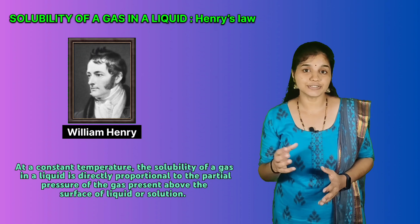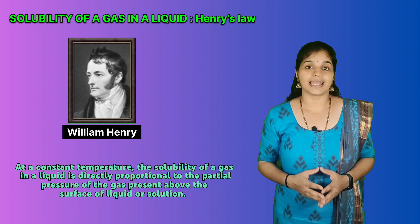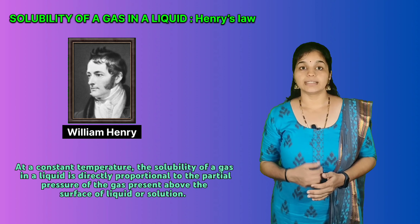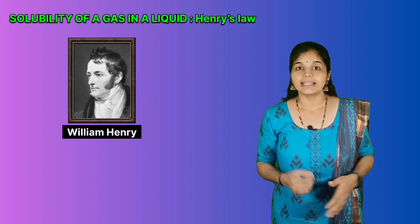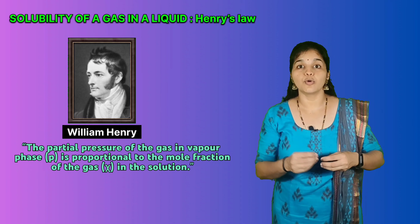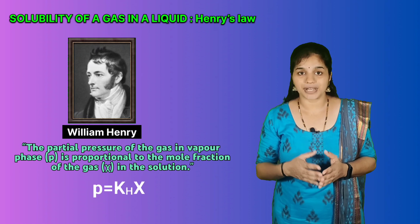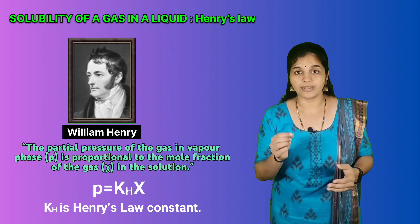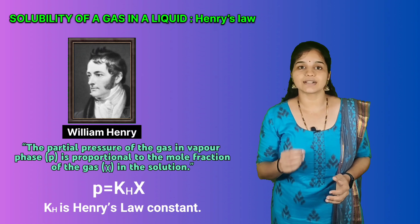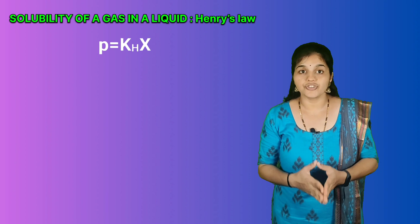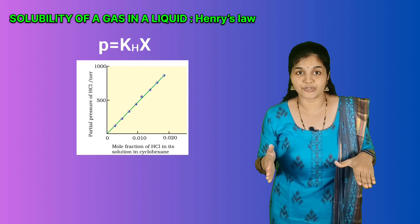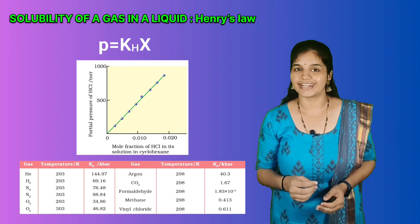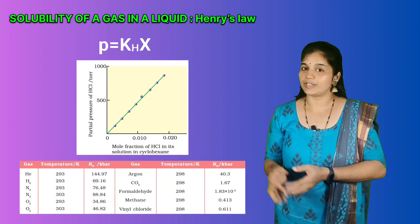If we use the mole fraction of a gas in a liquid solution as a measure of solubility, then the mole fraction of the gas in solution is directly proportional to the partial pressure of the gas over the solution. The most commonly used form of Henry's Law states that the partial pressure P of the gas in vapor phase is proportional to mole fraction χ of the gas in the solution. Mathematically, Henry's Law is written as P = K_H × χ, where K_H is Henry's Law constant. When we plot partial pressure versus mole fraction, we get a straight line passing through the origin. Different gases have different values of K_H at the same temperature, as shown in the table here.